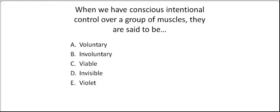When we have conscious, intentional control over a group of muscles, they are said to be voluntary, involuntary, viable, invisible, or violet.